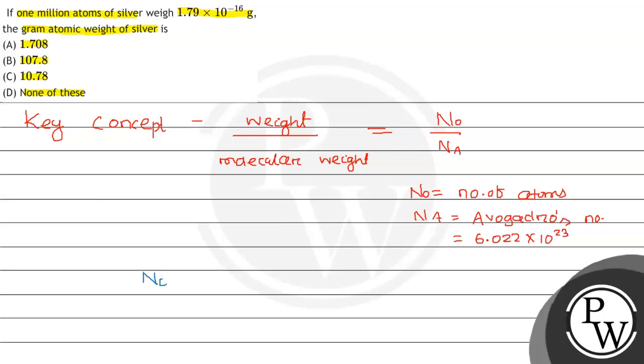Number of silver atoms, that is, N₀, yaan par hamei deya gya hai 1 million. 1 million means 10⁶ atoms, 1 × 10⁶ atoms. And uska mass hamei deya gya hai,